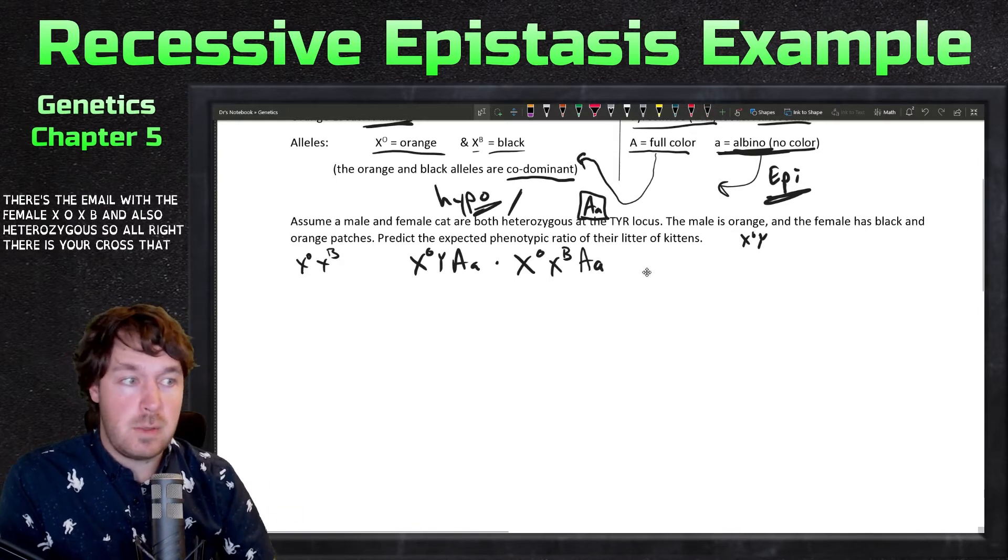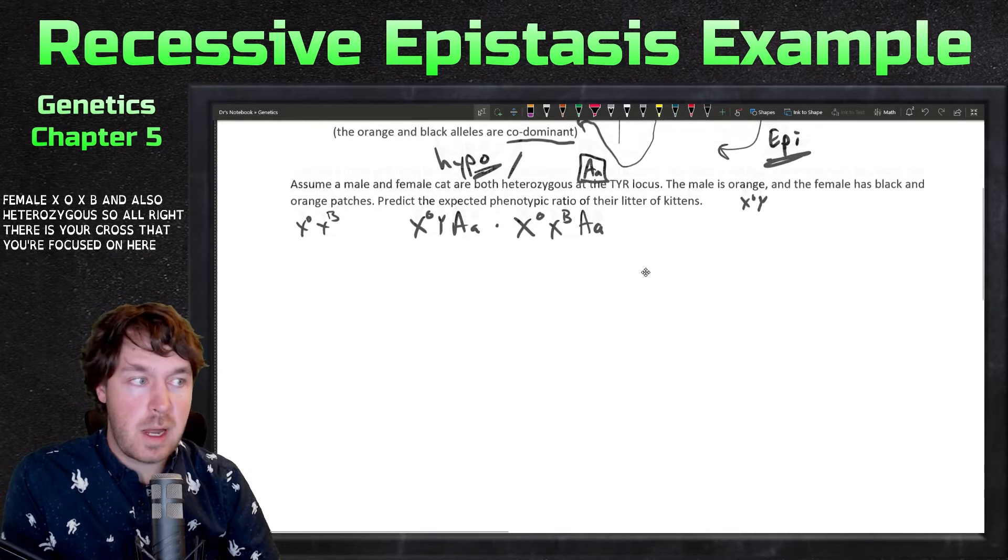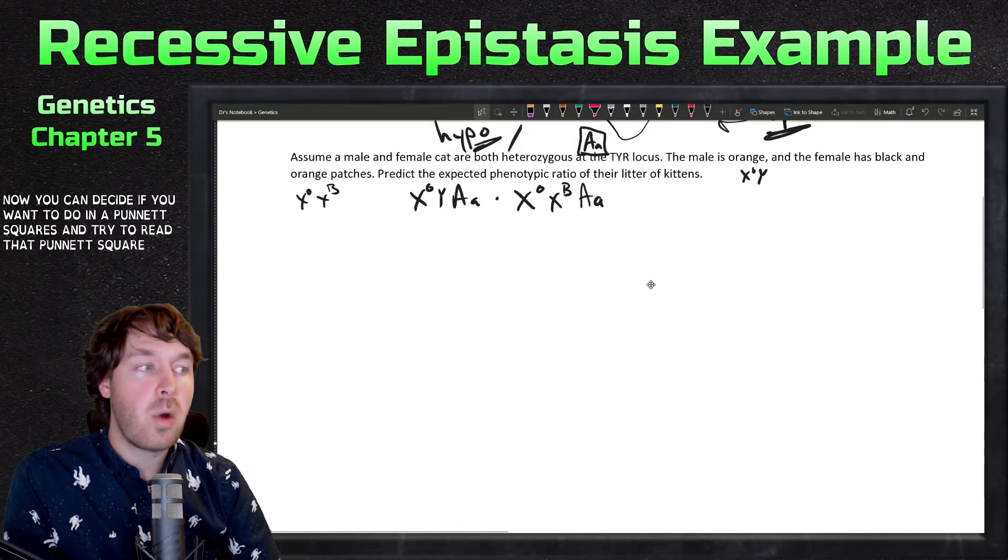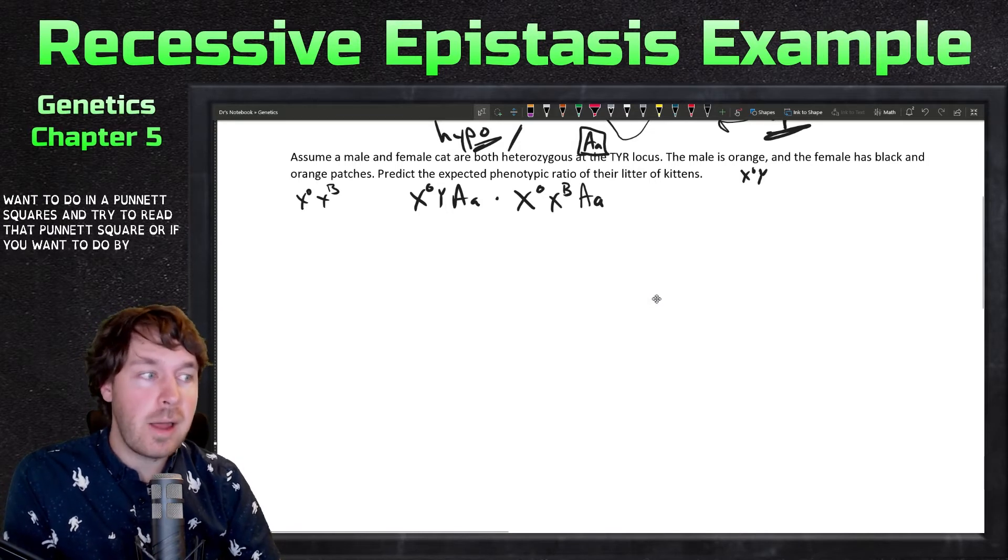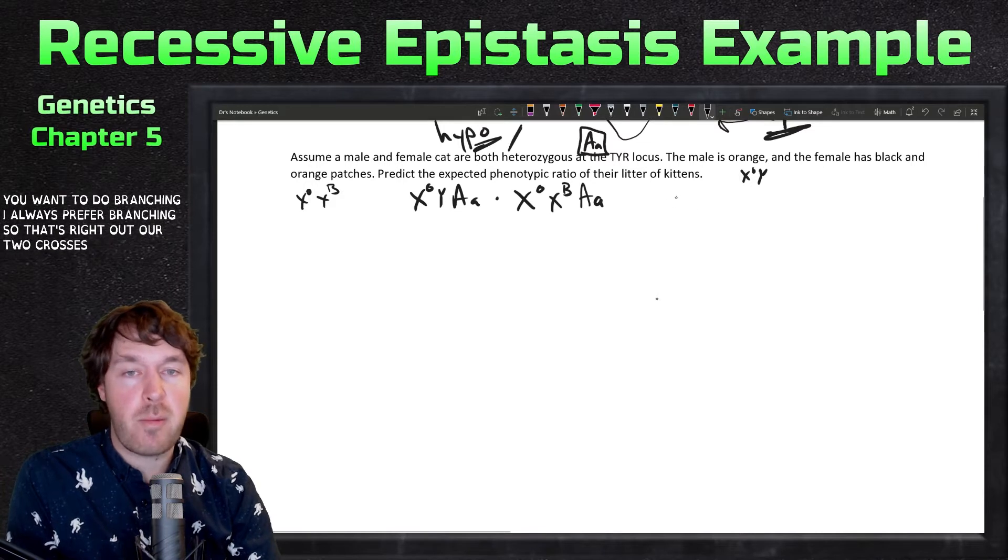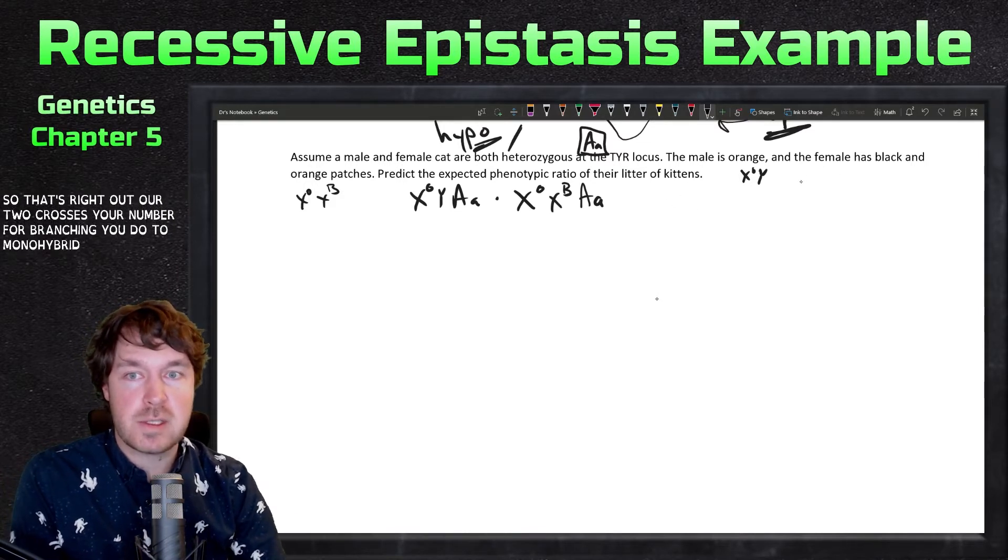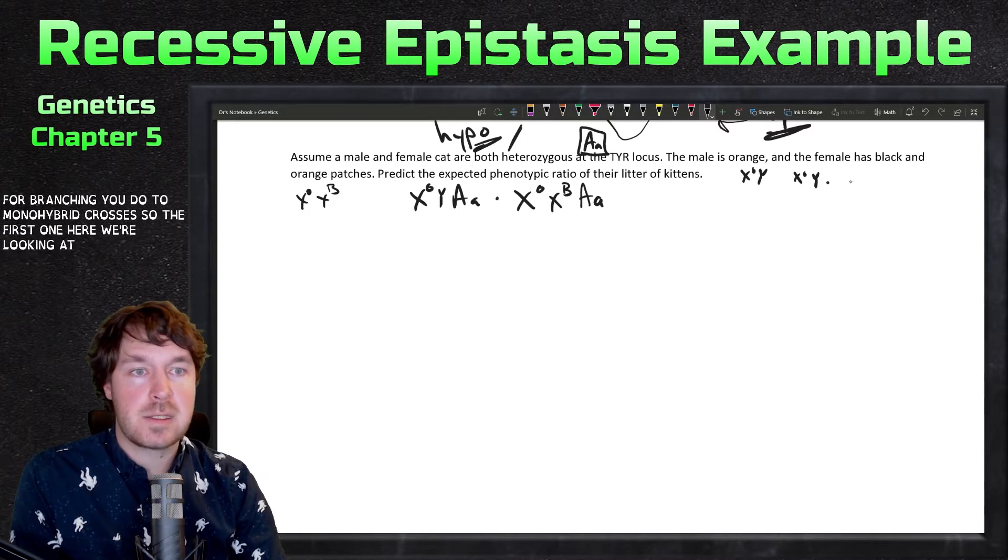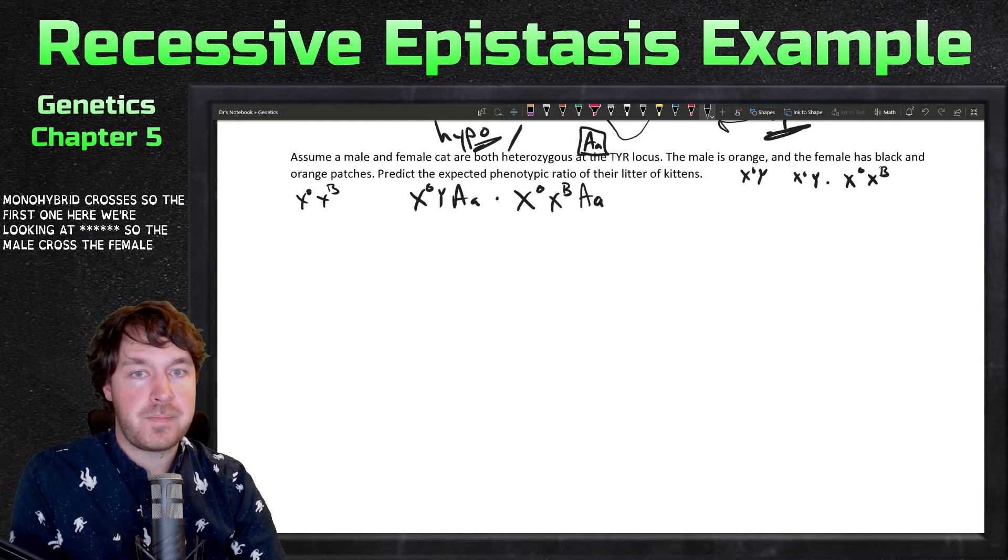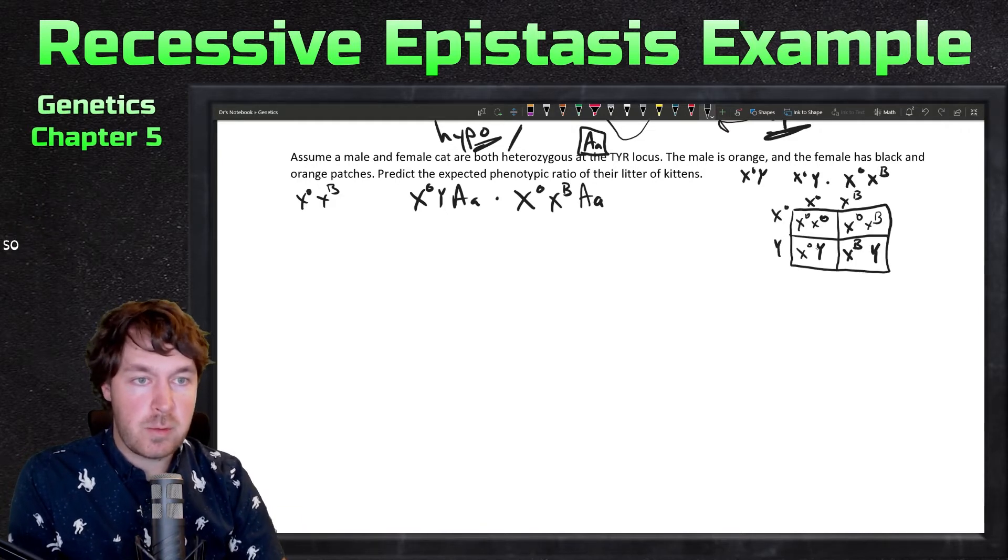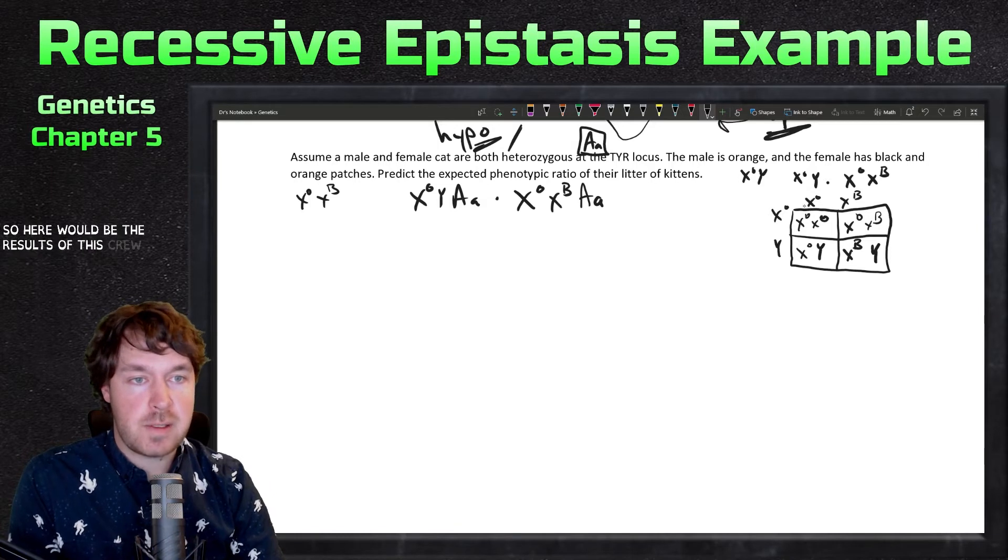There is your cross that you're focused on here. Now you can decide if you want to do a Punnett square then try to read that Punnett square, or if you want to do branching. I always prefer branching. Let's write out our two crosses here. Remember for branching you do two monohybrid crosses. The first one here we're looking at sex, so the male crossed with the female. Do this cross out real fast.